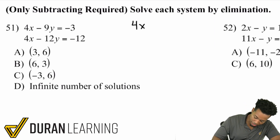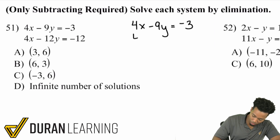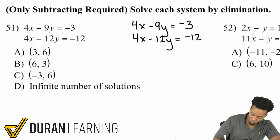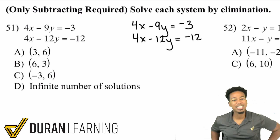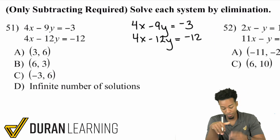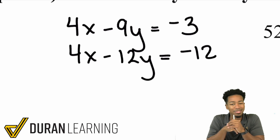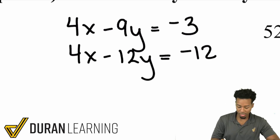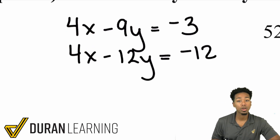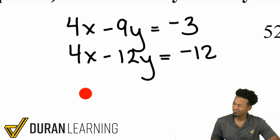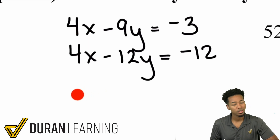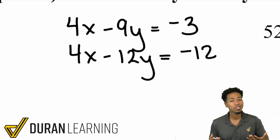We have 4x minus 9y equals negative 3, and 4x minus 12y equals negative 12. If you were to add these two equations together, that wouldn't work, because 4x plus 4x gives you 8x — not really going to work out. You want to eliminate one of the variables, so adding these wouldn't make sense.